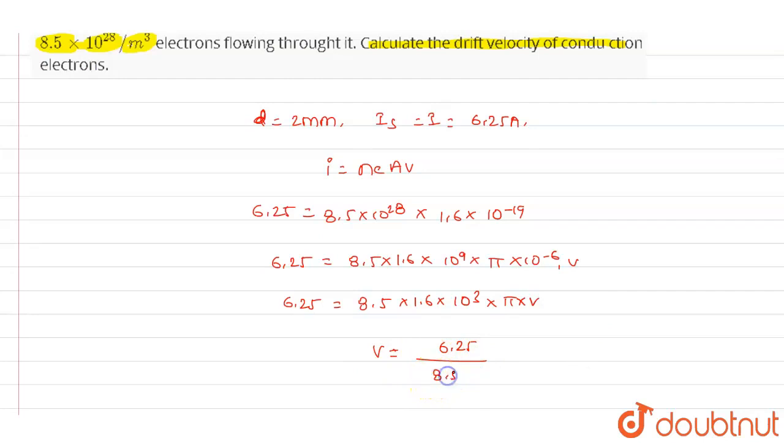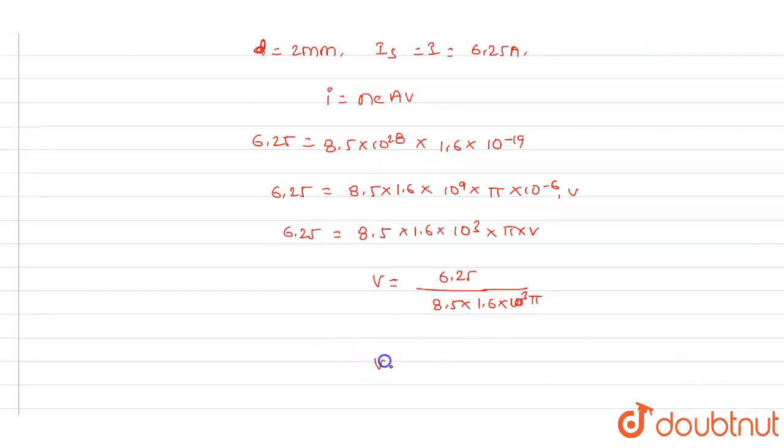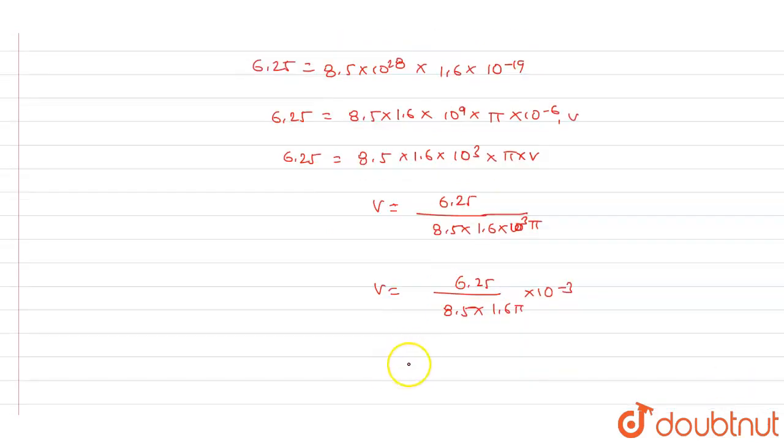By simplifying the above equation, we will get v = 6.25 / (8.5 × 1.6 × π) × 10^-3.